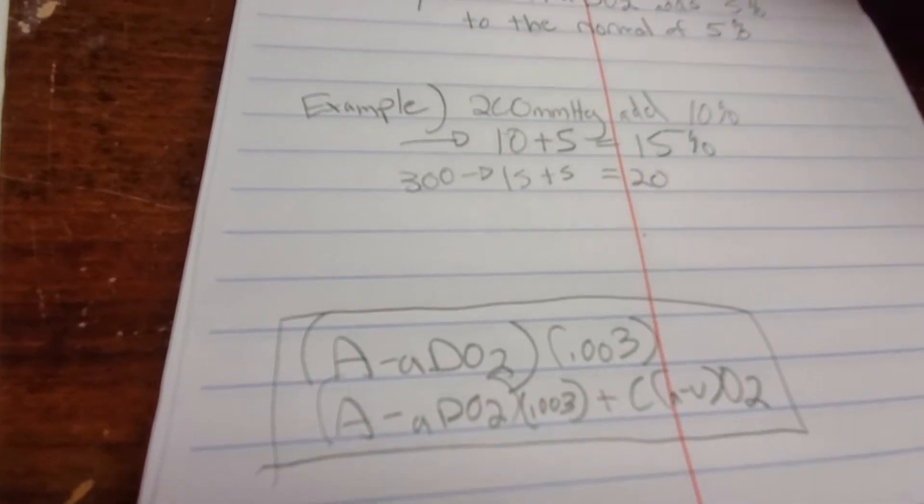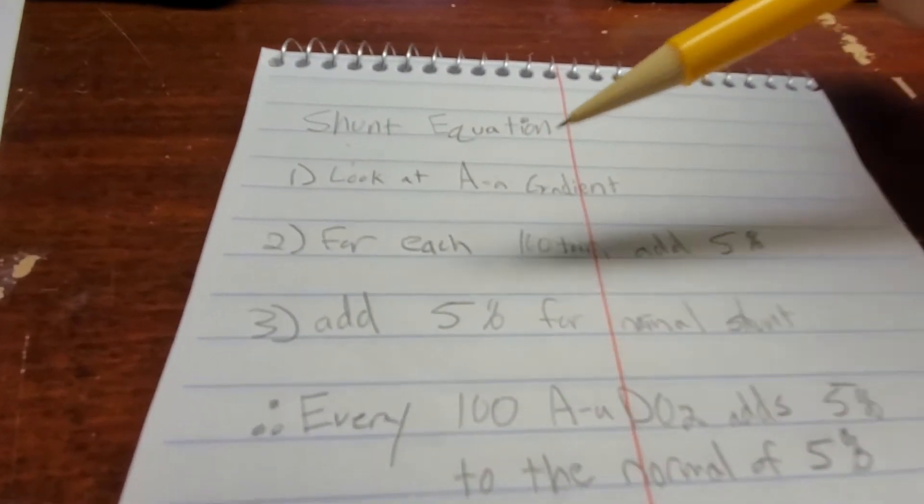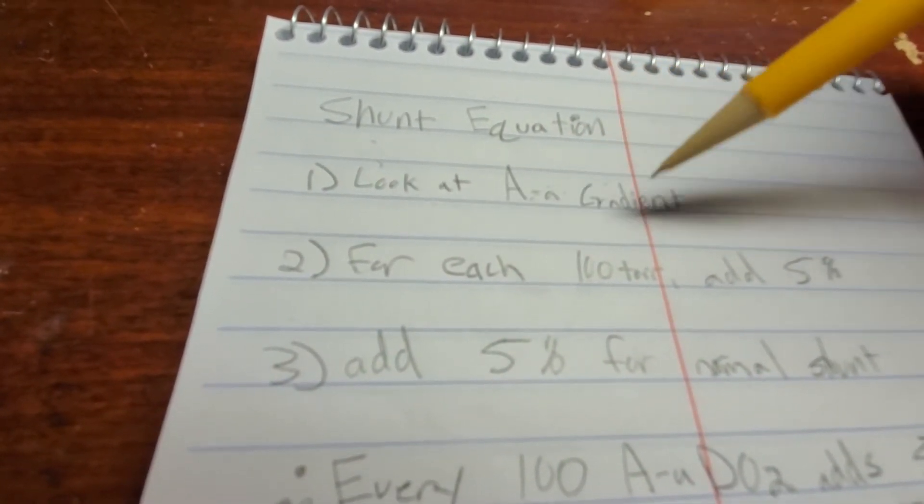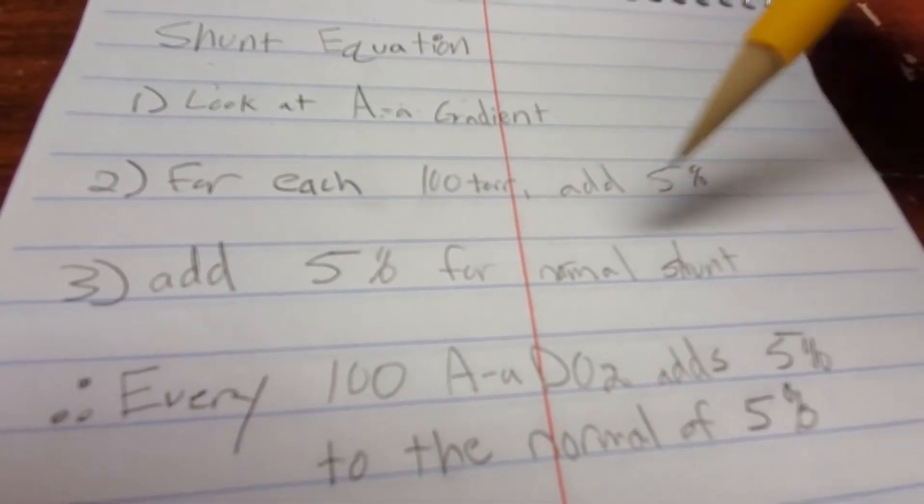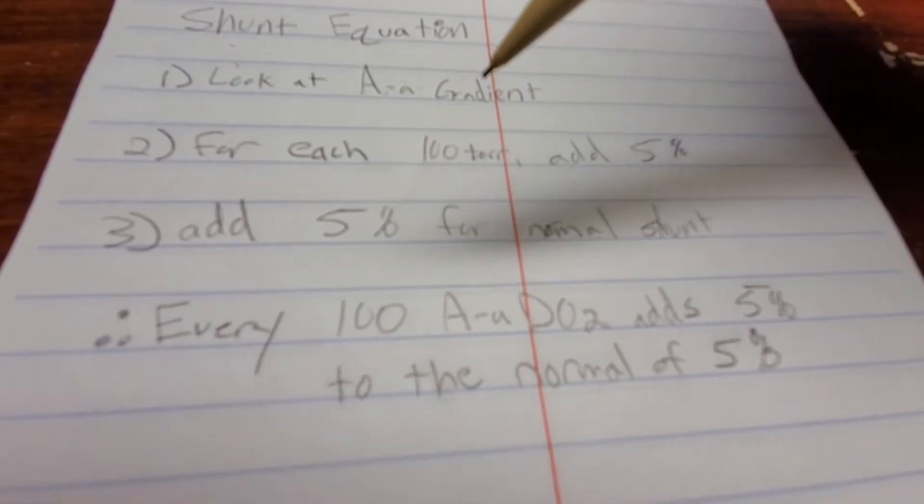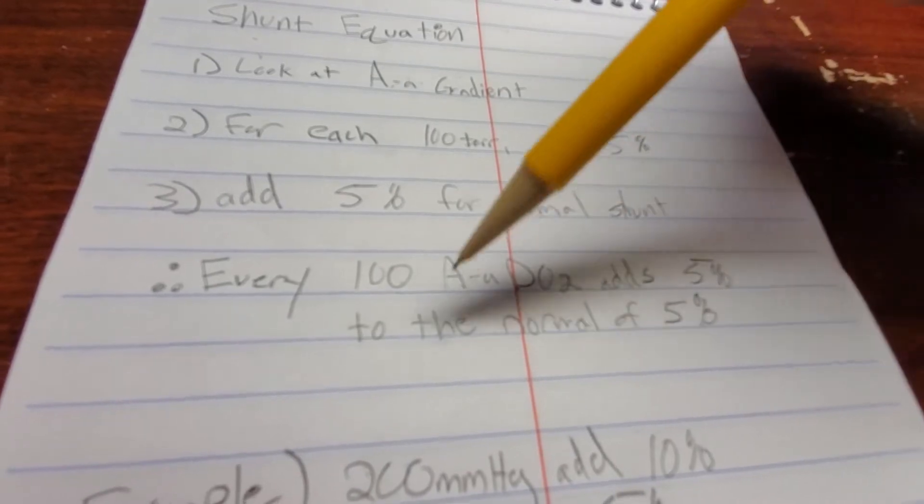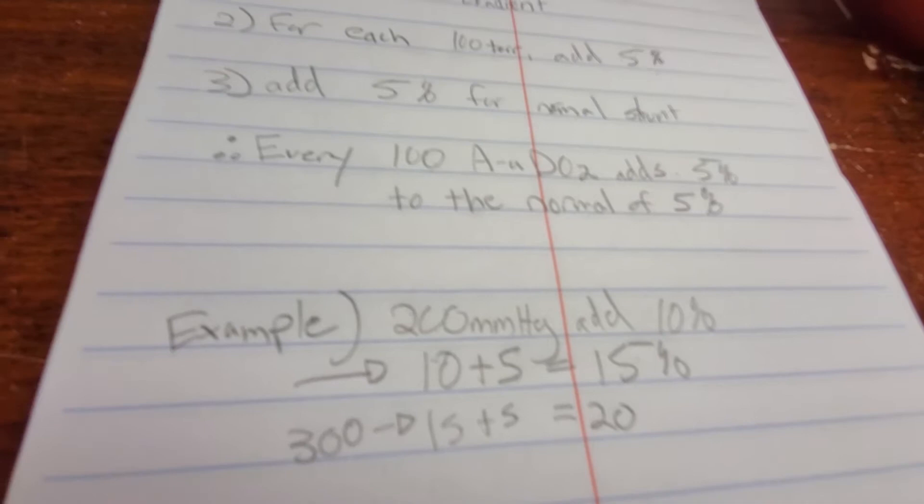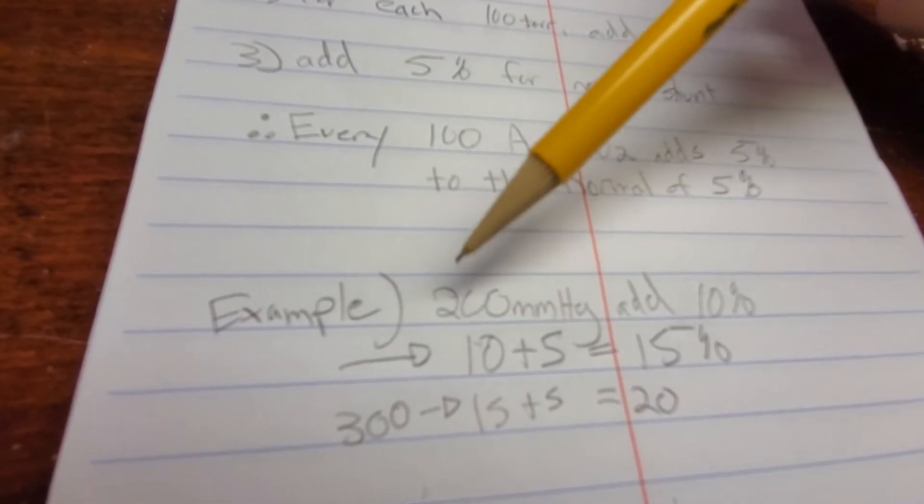So really easy. You don't need this. This sucks. Nobody wants you to do that. Do it this way. This is the better way. So to reiterate, A minus A gradient, you look at that. You take 100 torr, you add 5% for each 100 torr. So for every 100 torr, you add 5% to the normal 5. I don't know how I can explain it any better. It's just so easy. Why wouldn't you do this way?